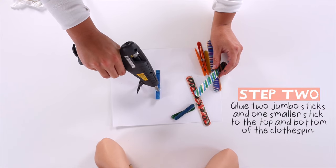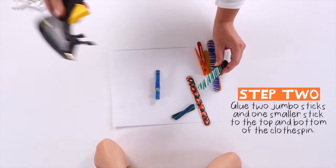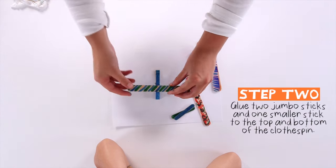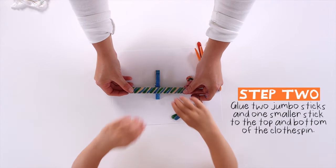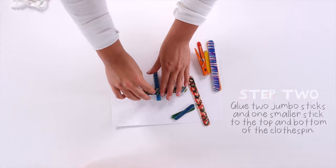Then glue one popsicle stick on top and another one on the bottom. Then take a small popsicle stick and glue it on the back.